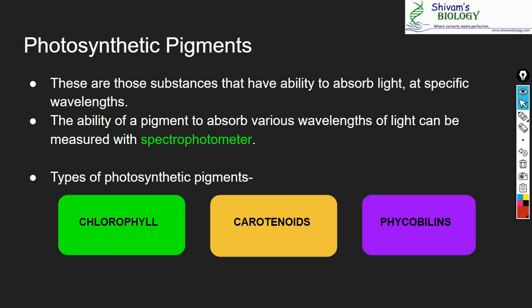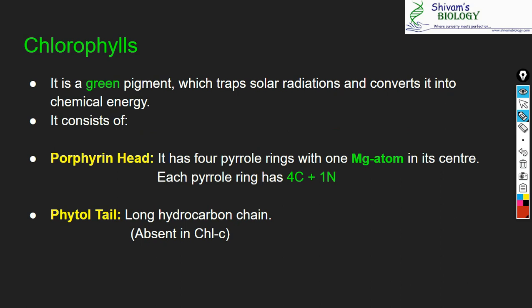The main types of photosynthetic pigments are chlorophylls, carotenoids, and phycobilins. Chlorophyll is a green pigment that traps solar radiation and converts it into chemical energy — it is the main pigment which helps in the process of photosynthesis. The molecule of chlorophyll contains a head called the porphyrin head. The porphyrin head has four rings called pyrrole rings with one central magnesium atom.